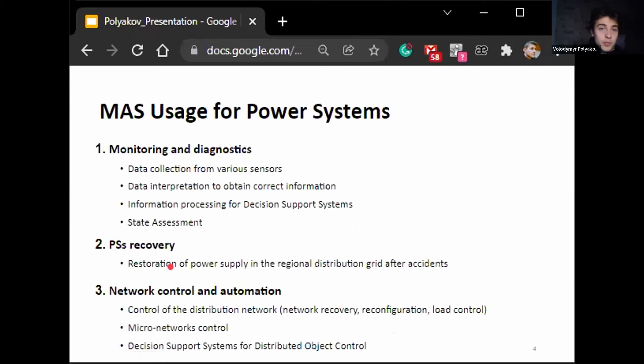Multi-agent systems used for power applications can be split into three sections: monitoring, recovery, and network control and automation. Monitoring is usually about data collection and interpretation, for example, reading data of different formats in a correct way, information processing, meaning information preparation for decision support systems and state assessment, meaning actual monitoring and also diagnostics of any system being assessed. Power system recovery is mainly about restoration of power supply in distribution grid after accident, and network control and automation is about control under normal conditions and modes of operation. In particular, I will later discuss distributed object control under decision support system on the next slide.